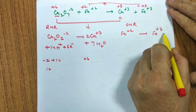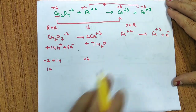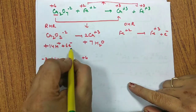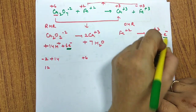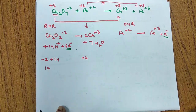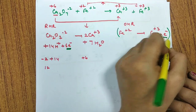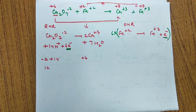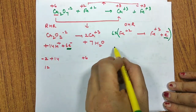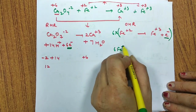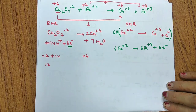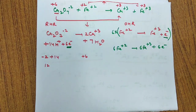The reduction half reaction has 6 electrons and the oxidation half reaction has 1 electron. To equate, multiply the oxidation half reaction by 6: 6Fe²⁺ → 6Fe³⁺ + 6e⁻. Now both half reactions have 6 electrons and all atoms are balanced, so we can add them together.